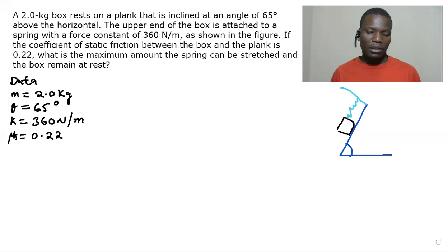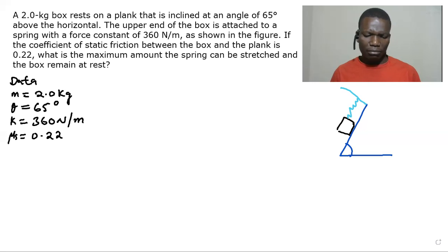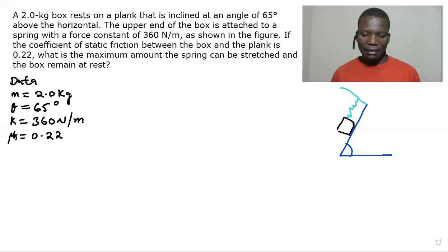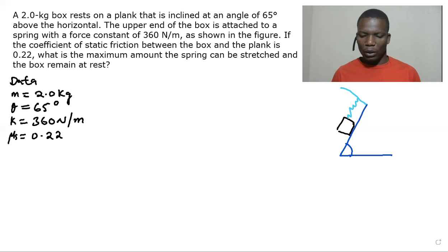A two kilogram box rests on a plank that is inclined at an angle of 65 degrees above the horizontal. The upper end of the box is attached to a spring with a force constant of 360 newtons per meter, as shown in the figure. If the coefficient of static friction between the box and the plank is 0.22, what is the maximum amount the spring can be stretched and the box remains at rest?